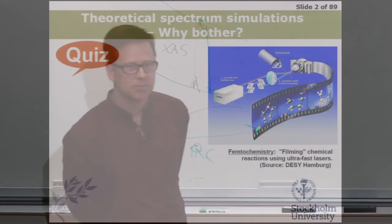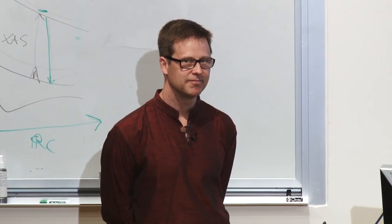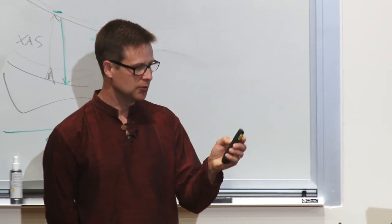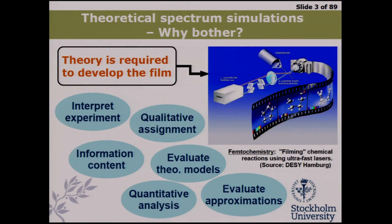I'll start with a rhetorical question: why would we like to do theoretical simulations? If you look at experimental work, they usually have this mental picture where they perform a beautiful experiment and get out a film of what's actually happening. So where do I come in? My point of view is that in order to actually see all the chemistry going on, we need to interpret the experimental spectra. That's perhaps the main point, and it can be done on very different levels.